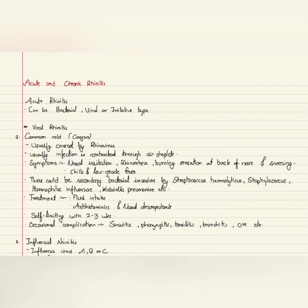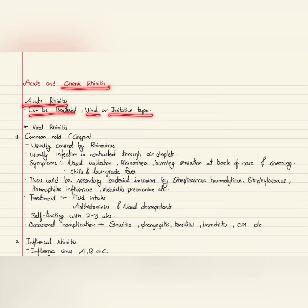In this video we're going to learn about atrophic rhinitis. But first, what is rhinitis? Rhinitis is an inflammation of the nose, or more accurately, it is an inflammation of the mucosa of the nose. It is of two types: acute rhinitis and chronic rhinitis. Acute rhinitis can be bacterial, viral, or irritative type.